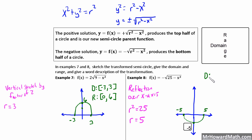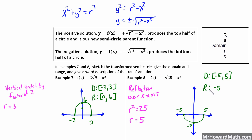Domain: go to the leftmost point, negative 5, with a bracket since it's included, to the rightmost point at positive 5, also with a bracket. Range: go all the way to the bottom — that's negative 5, with a bracket, included — all the way up to the top, which is at 0, also included. So domain is negative 5 to 5, range is negative 5 to 0.